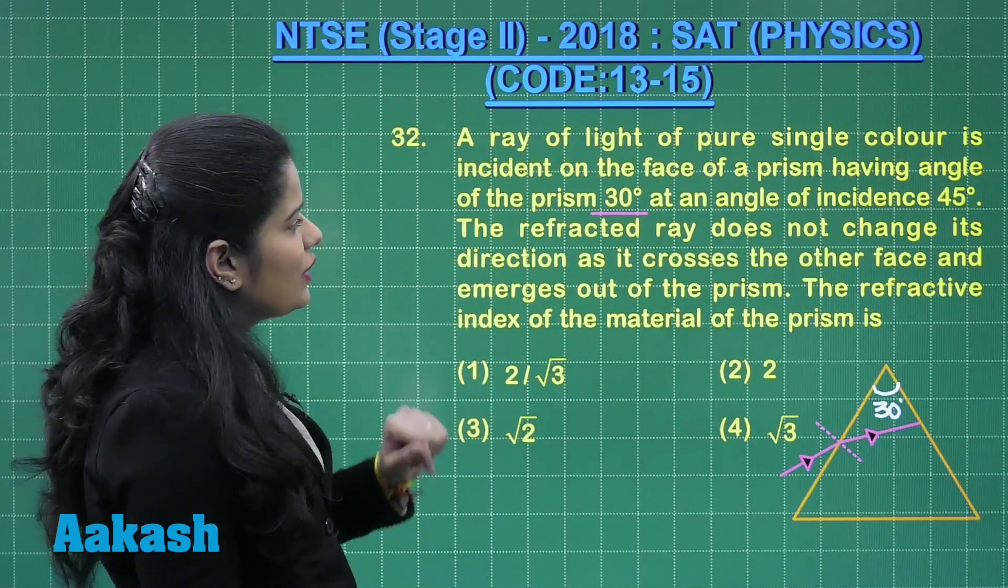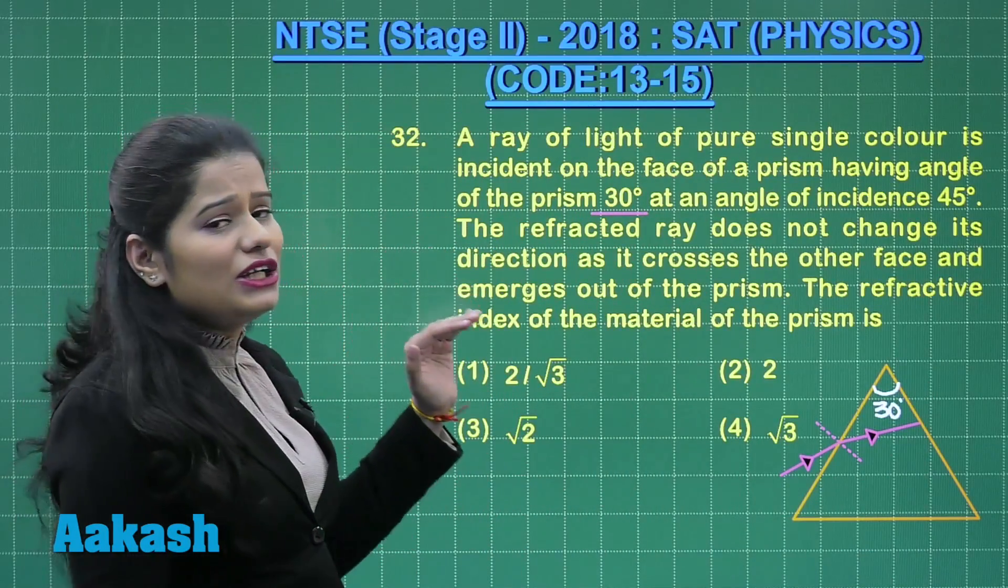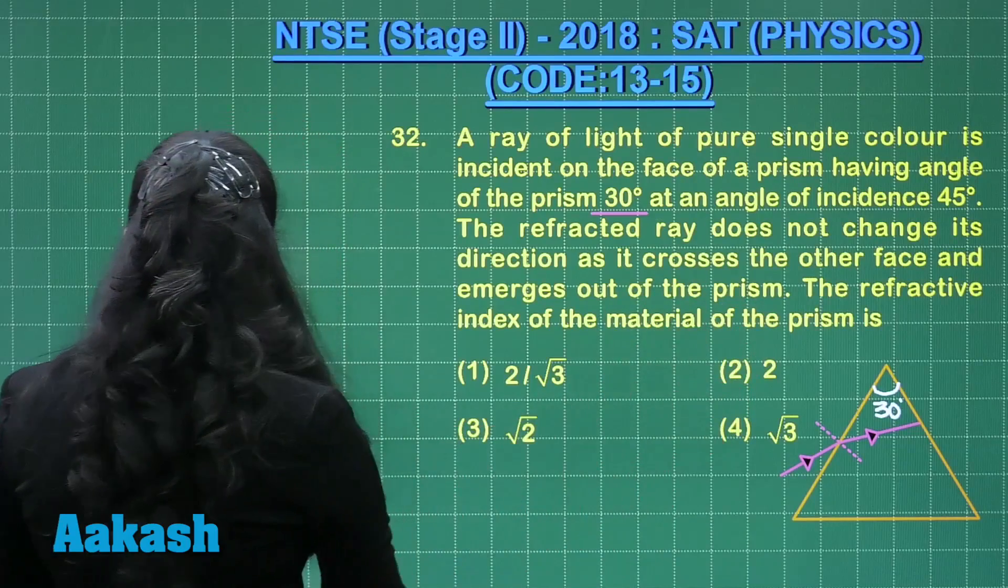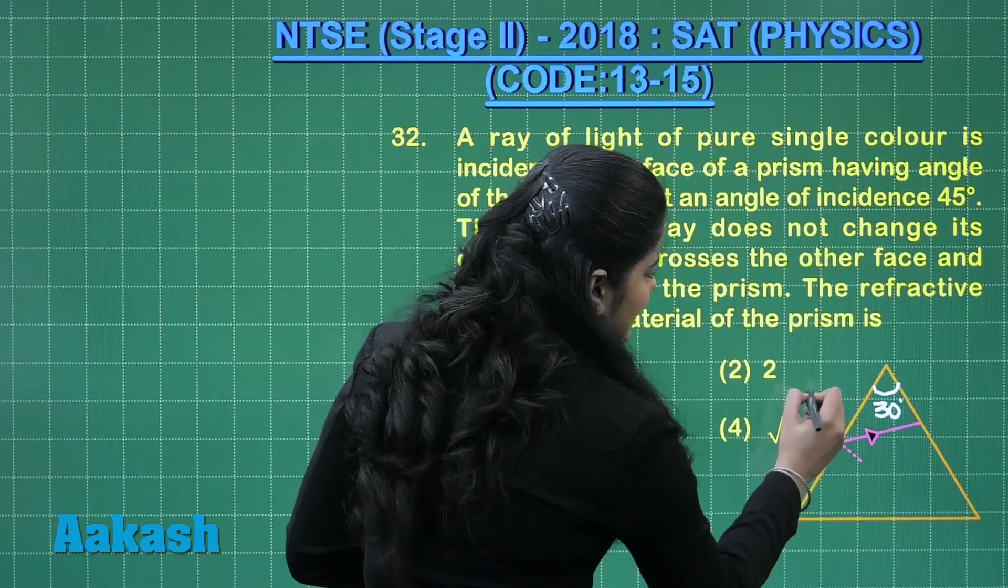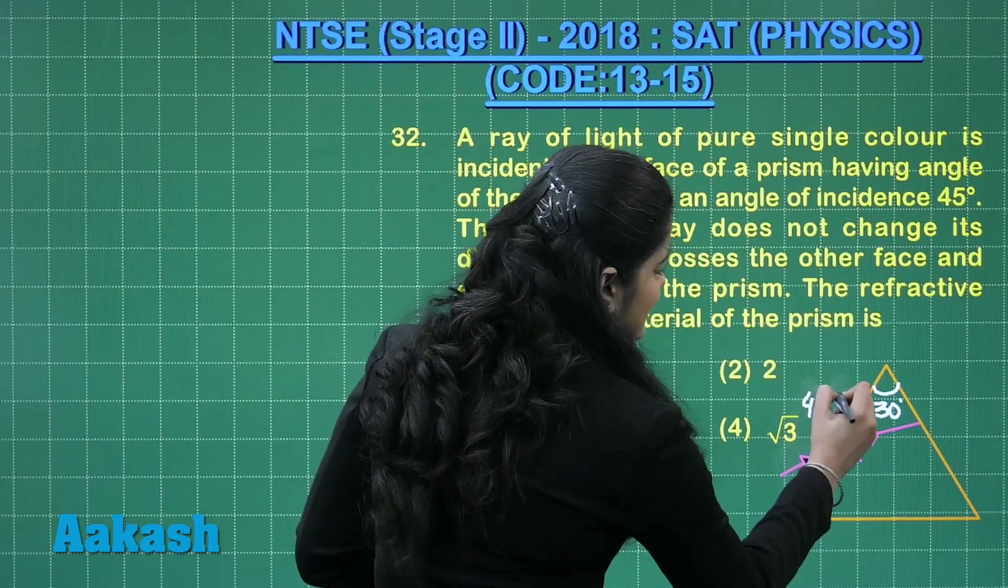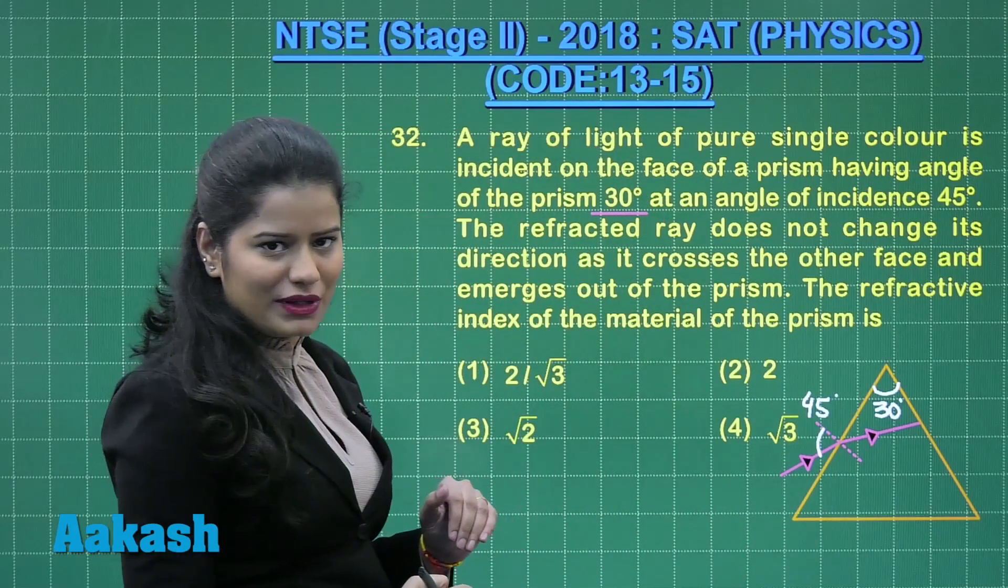Further, the question says about the angle of incidence. By having a look at this figure, you can clearly see that this is a normal. So this angle here is 45 degrees, that is the angle of incidence.